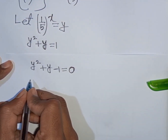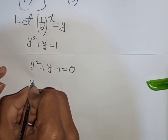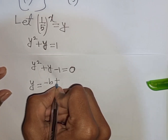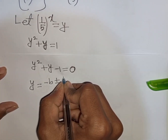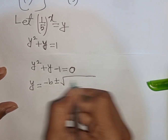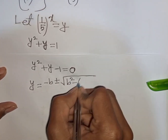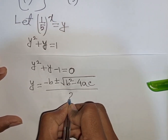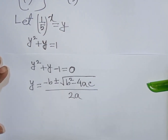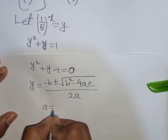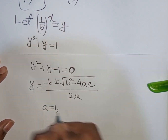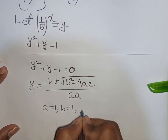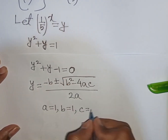Now here you can apply the quadratic formula: y equals minus b plus or minus square root of b squared minus 4AC, divided by 2A. Here A equals 1, B equals 1, and C equals minus 1.